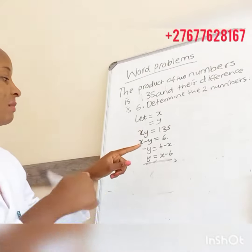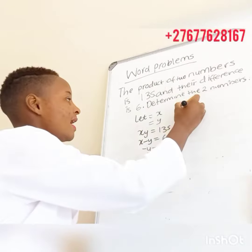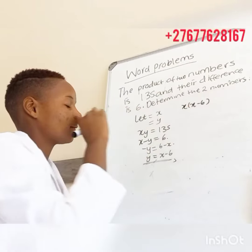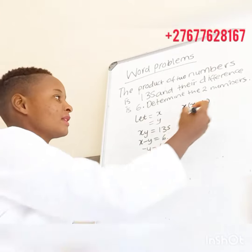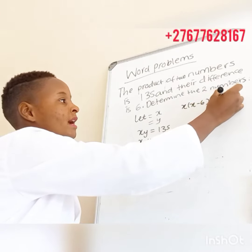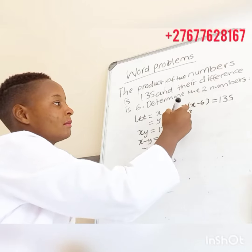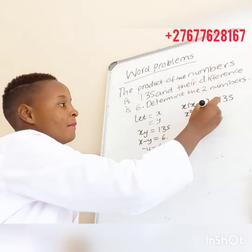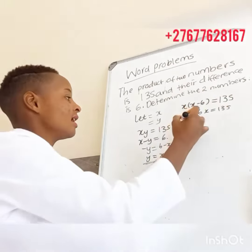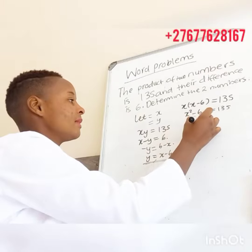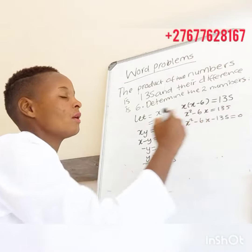We are told that when we multiply these two we are going to get 135. So let's multiply x by x minus 6, since we have written y in terms of x. So x times (x minus 6) equals 135. Expanding: x squared minus 6x equals 135, which gives us x squared minus 6x minus 135 equals 0.